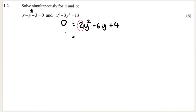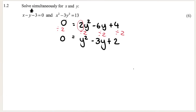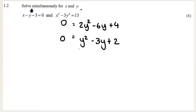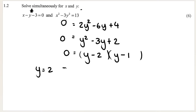We can simplify further by dividing everything by 2, giving y squared minus 3y plus 2 equals zero — or equivalently, take out 2 as highest common factor and divide both sides by 2. Factorizing the trinomial gives two answers for y: y equals 2 or y equals 1. It's a quadratic equation so we get two solutions for y.